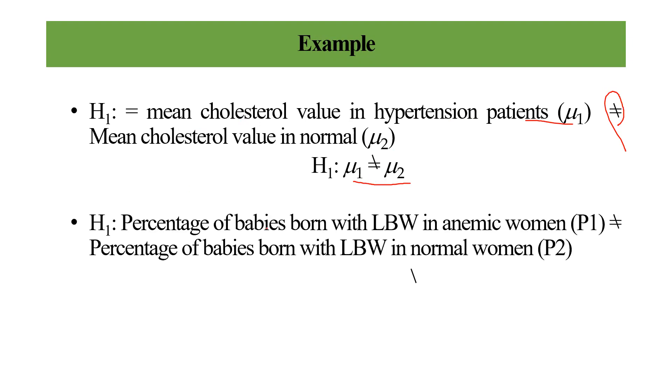And percentage of babies born with low birth weight in anemic mother P1 does not equal to percentage of babies born with low birth weight in normal women P2. P1 does not equal to P2, where P2 means anemic women and P1 means normal women. Does not equal to means it may be greater or it may be less, there are both possibilities. That's why it is known as two-sided test.